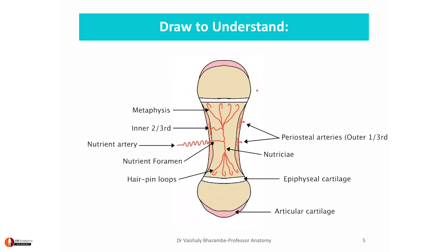The third artery is the metaphysial artery. These are branches from the anastomotic arcade around the joint. They enter into the metaphysis to anastomose with branches that have entered into the metaphysial region.